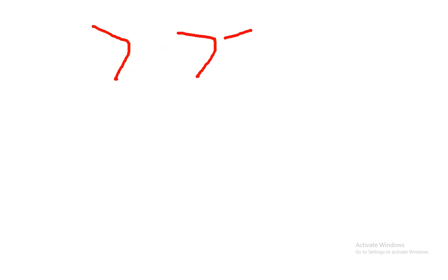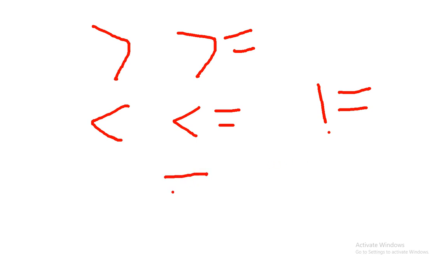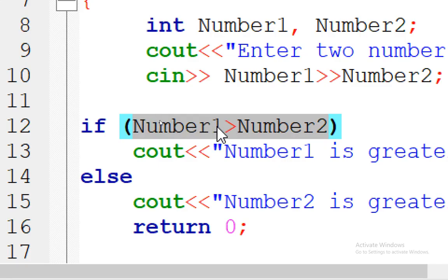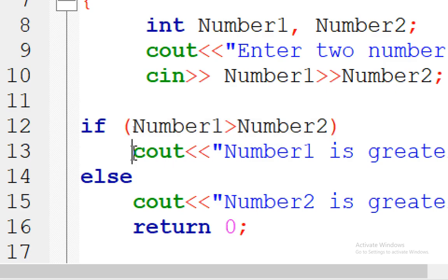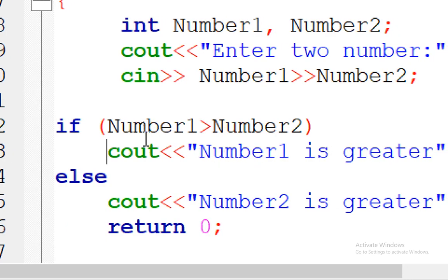This is the greater-than operator, this is greater-than-or-equal, this is less-than, this is less-than-or-equal, and this with the exclamation mark is not-equal. For equality, we use two equal signs — if I want to compare two values and ask if they are equal, I use double equals. So here, if number one is greater than number two, this is the one condition we want to check.